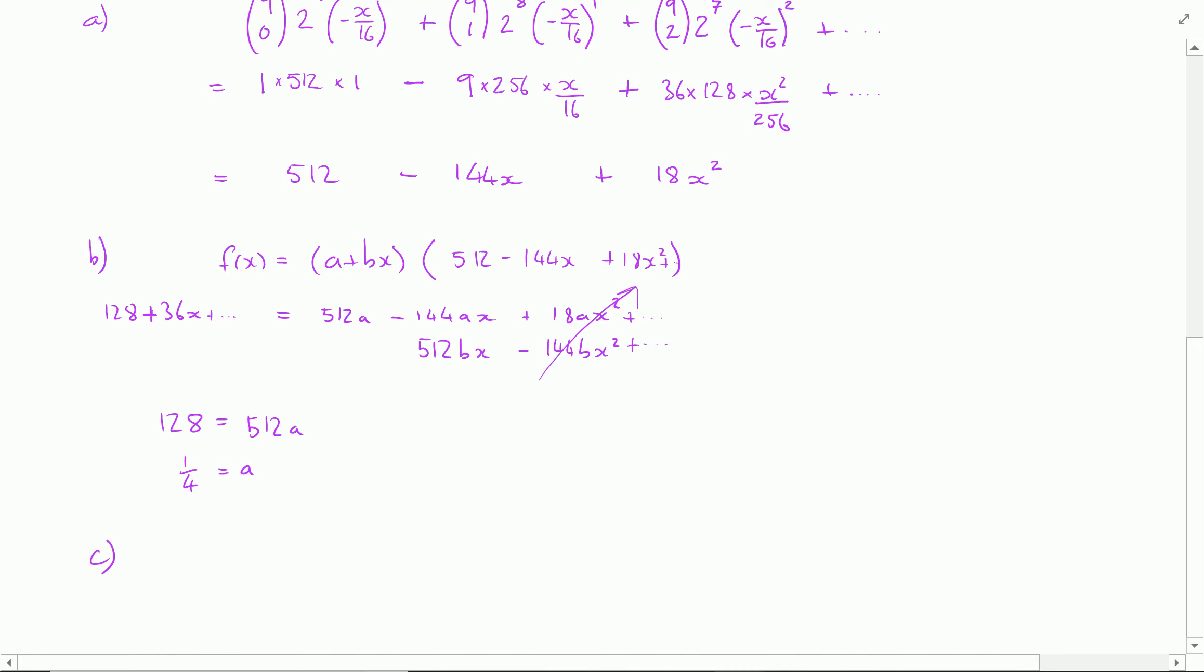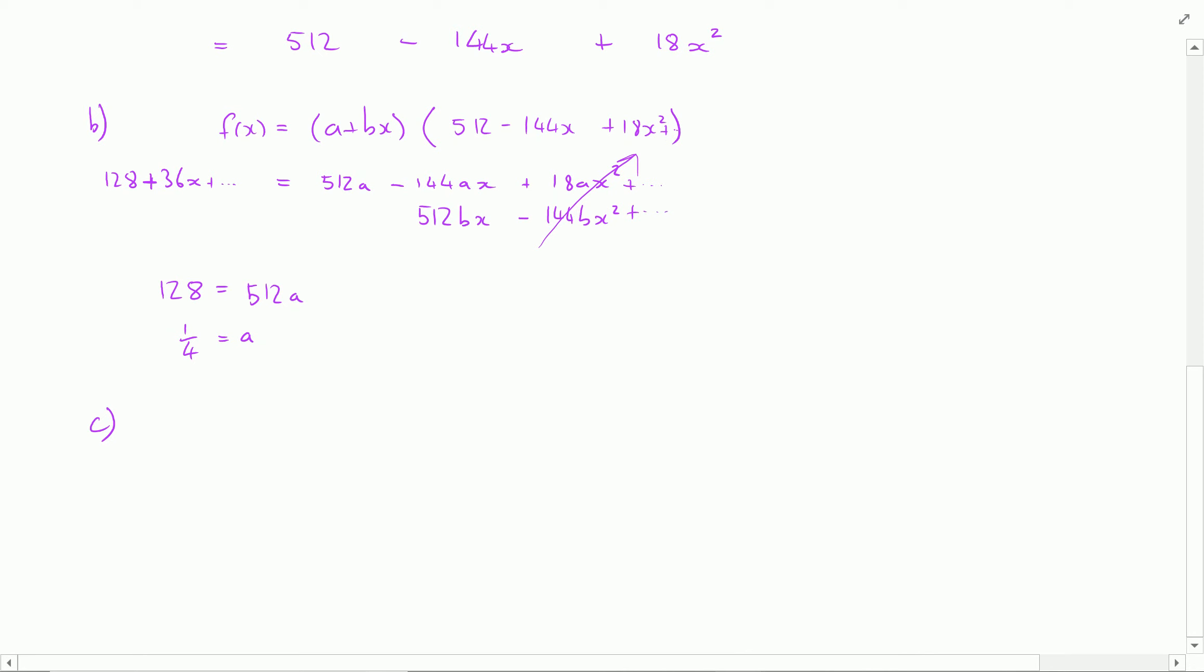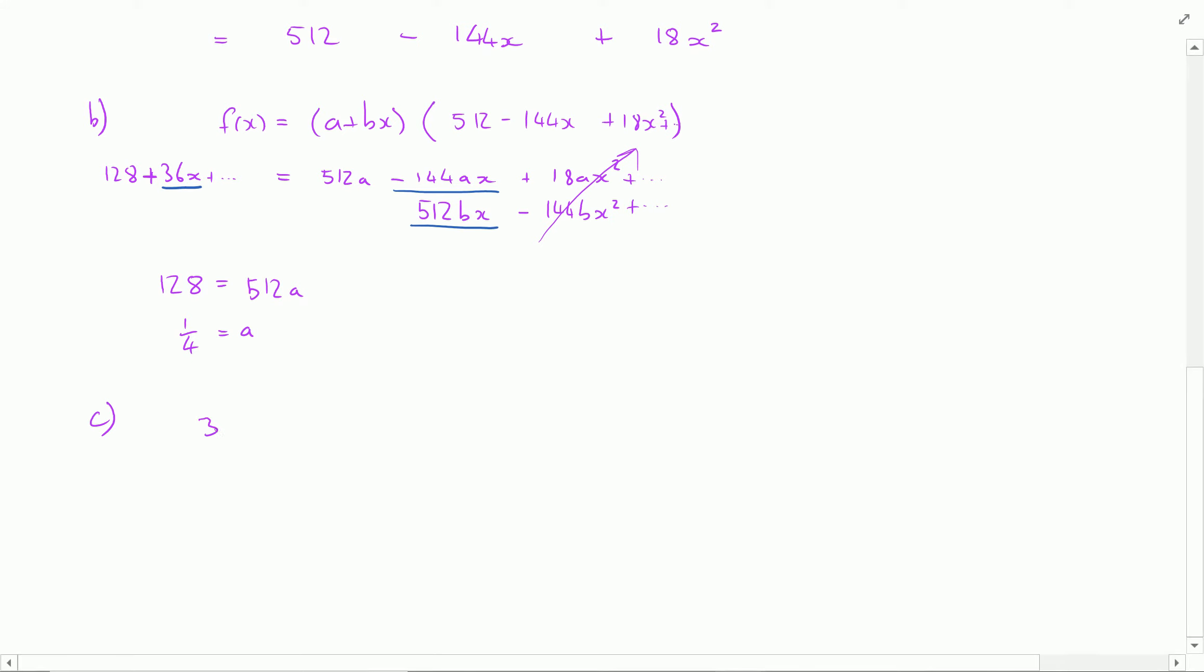Now I can immediately move on to part c which was to work out the value of b. Now to do that I'm going to compare the coefficients of x. So that was what I had here, that's what I've got here and what I've got here. Being very careful to preserve the negative. So I know that 36 is going to be the same as 512b minus 144a.